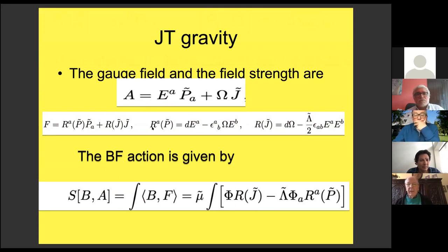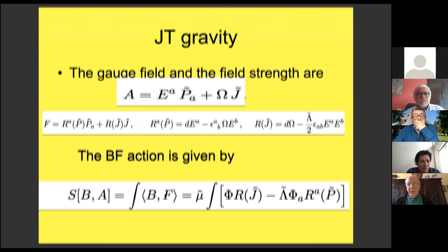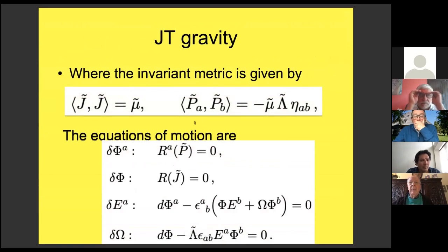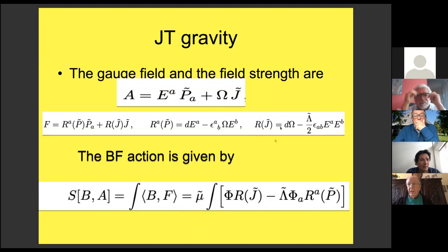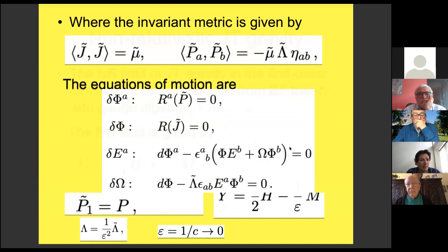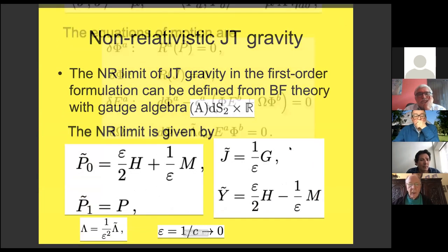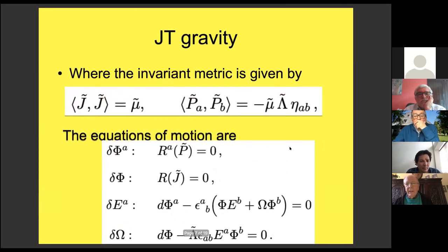The gauge field has this vielbein and the spin connection. One can compute the field strength given by this expression here and the action, the BF action, is the sandwich among B, F and F. In order to do that you need to give a meaning what the sandwich means, you need to have an invariant metric that is given in this form here. If we consider the equations of motion it implies that all the curvatures are equal to zero. We have this invariant metric is not degenerate therefore all the F's are equal to zero.